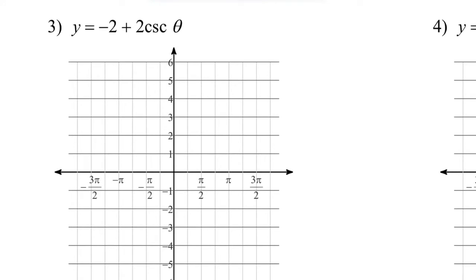Now we want to graph y equals negative 2 plus 2 cosecant of theta. Our first step is to pretend that we're graphing the reciprocal. So we're going to graph y equals negative 2 plus 2 sine of theta.